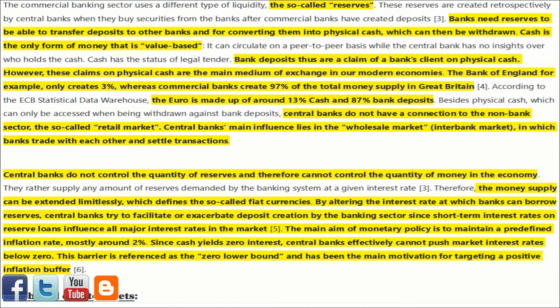Cash has the status of legal tender. Bank deposits are a claim of a bank's client on physical cash. However, these claims on physical cash are the main medium of exchange in our modern economies. The Bank of England, for example, only creates 3%, whereas commercial banks create 97% of the total money supply in Great Britain.